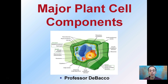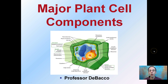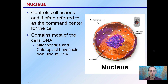When we look at plants, we're probably very familiar with the stems, roots, and leaves, but we also have to consider the major plant cell components. What does each one of those individual cells contain?